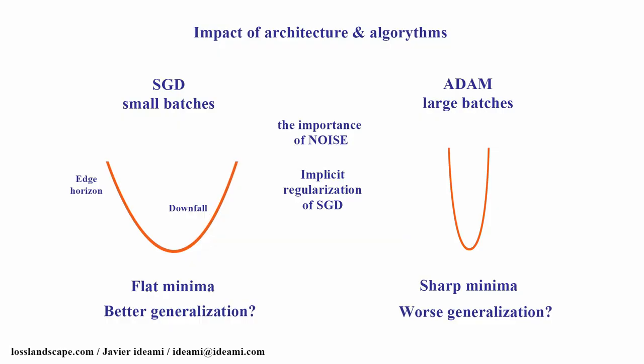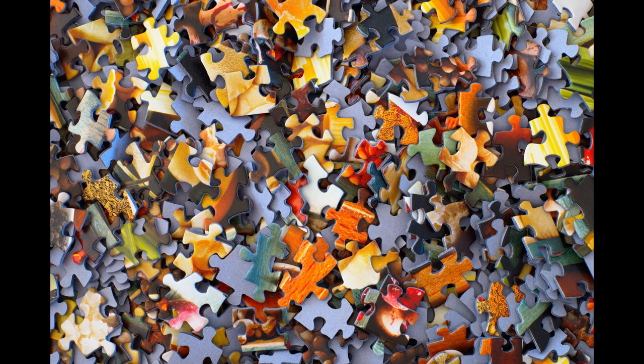Understanding the geometry of this loss function is crucial because there are very important implications relating geometry to network performance. For example, if we use stochastic gradient descent with small batch sizes, it's been shown that the minima we reach tend to be wider and flatter, and this tends to correlate with better generalization. The opposite may happen if we use the Adam optimizer and large batch sizes. For a while there was controversy about this, but there's now experimental demonstration. This is an example of how the geometry of the loss landscape has direct implications on network performance and generalization capabilities.